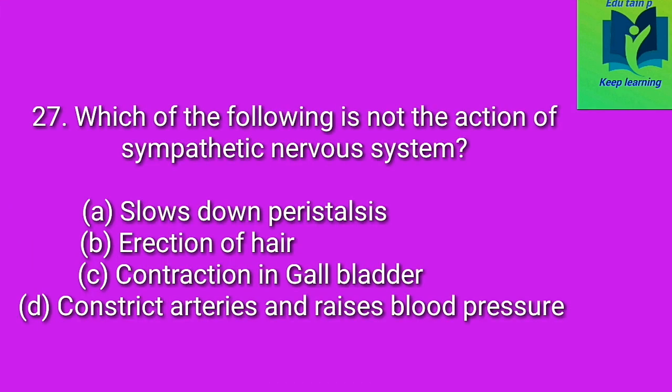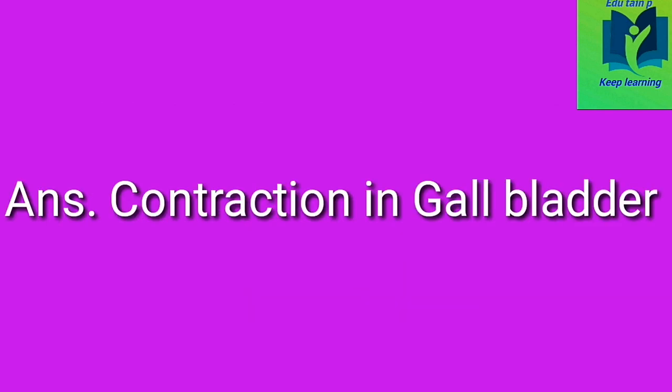Which of the following is not the action of the sympathetic nervous system? Option A: slows down peristalsis. Option B: erection of hair. Option C: contraction in gallbladder. Option D: constrict arteries and raise blood pressure. Answer: contraction in gallbladder.